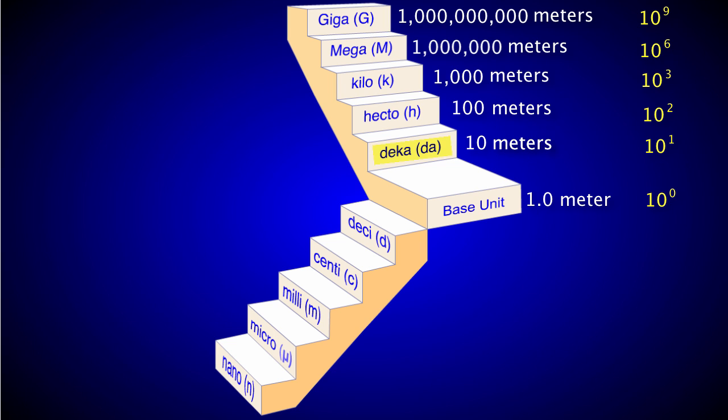Take deca, for instance. Deca is 10 to the first power. So you start with the base unit of 1.0, and then move the decimal point one space to the right. So 10 to the first power is equal to 10. Let's try mega. Mega is 10 to the sixth power. So start with your base of 1.0, and then move the decimal point six spaces to the right. So 10 to the sixth is equal to 1 million.